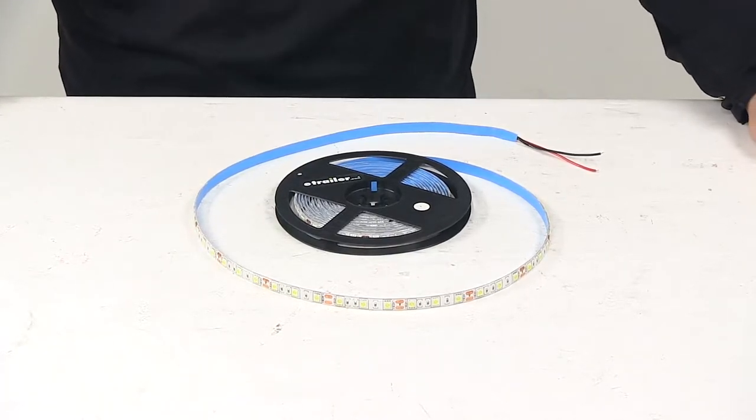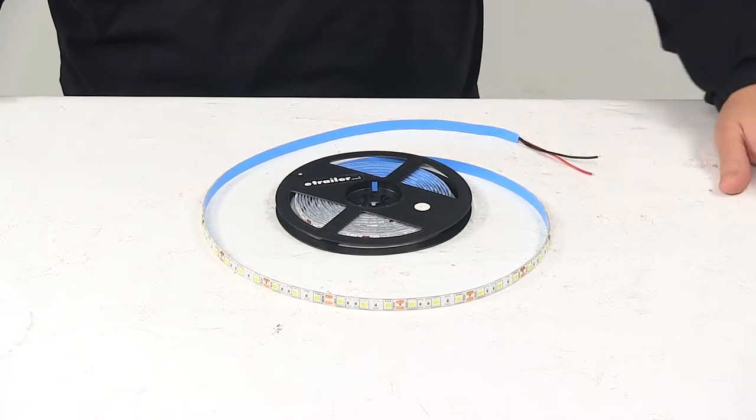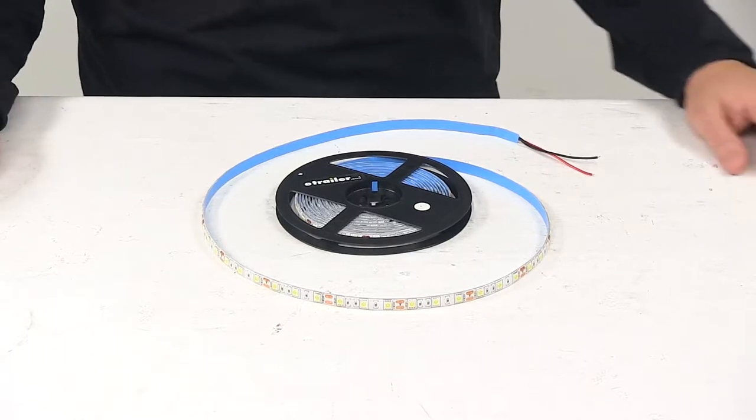Today we're taking a look at the Optronix flexible LED light strip. This light strip measures 17 feet long and it provides flexible lighting for indoor and outdoor spaces.